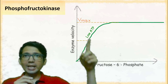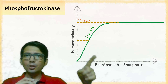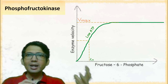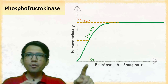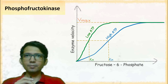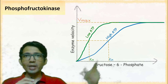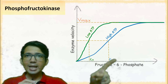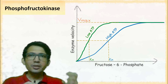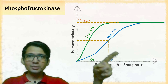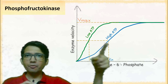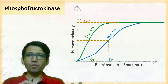When the concentration of ATP is low, the enzyme has a low KM value, meaning it can efficiently function even at low concentrations of fructose 6-phosphate. When the concentration of ATP in the cell is high, the KM value of this enzyme increases, meaning the enzyme now requires a high concentration of substrate to function. In simple words, high concentration of ATP acts as an inhibitor for this enzyme.